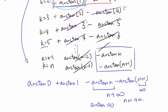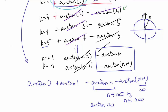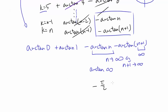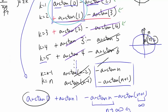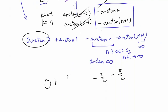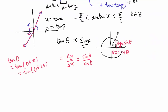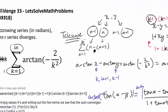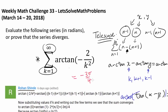In our case we let n approach infinity. Note that n approaching infinity and n plus 1 approaching infinity are the same thing. Arctangent of n as n approaches infinity: the slope approaches infinity, which happens as the line approaches a 90-degree angle, i.e., pi over 2. So we have minus pi over 2 and another minus pi over 2. Arctangent of 0 is 0, and arctangent of 1 is pi over 4. So our final answer is 0 plus pi over 4 minus pi over 2 minus pi over 2, which equals pi over 4 minus pi, or negative 3 pi over 4.